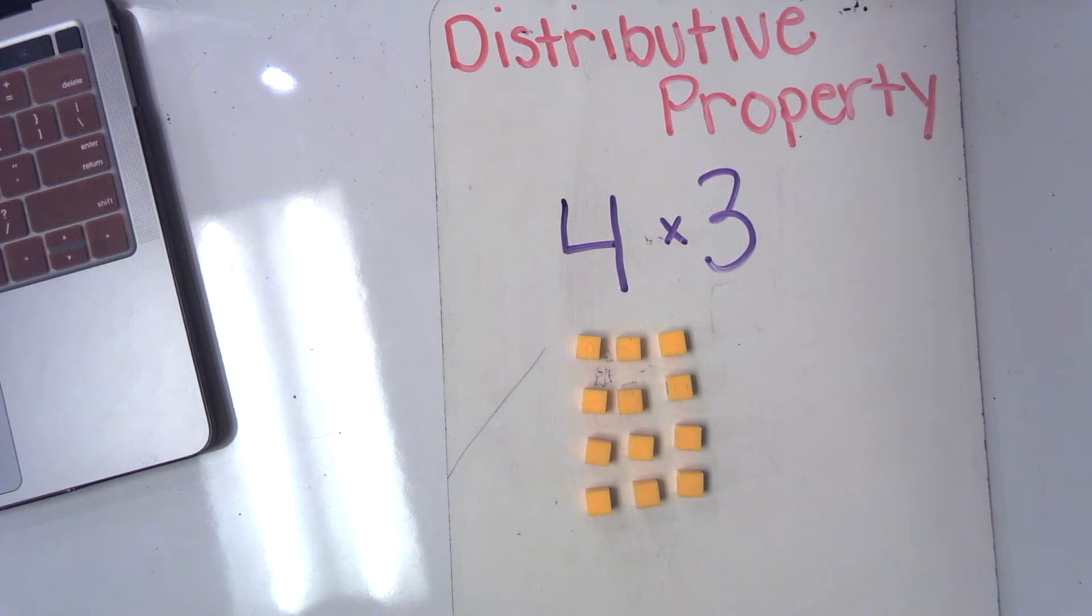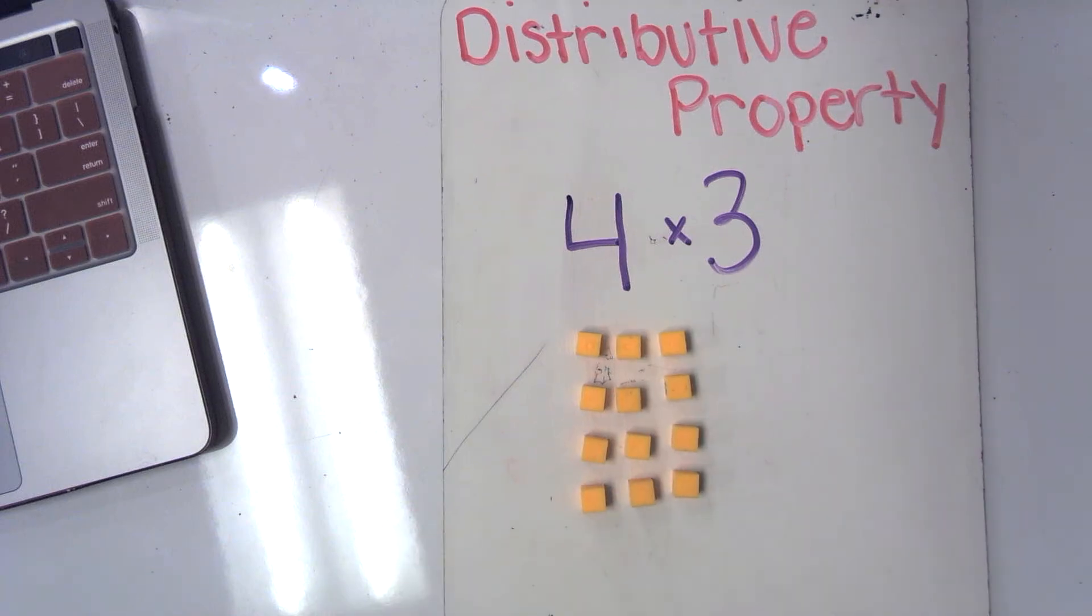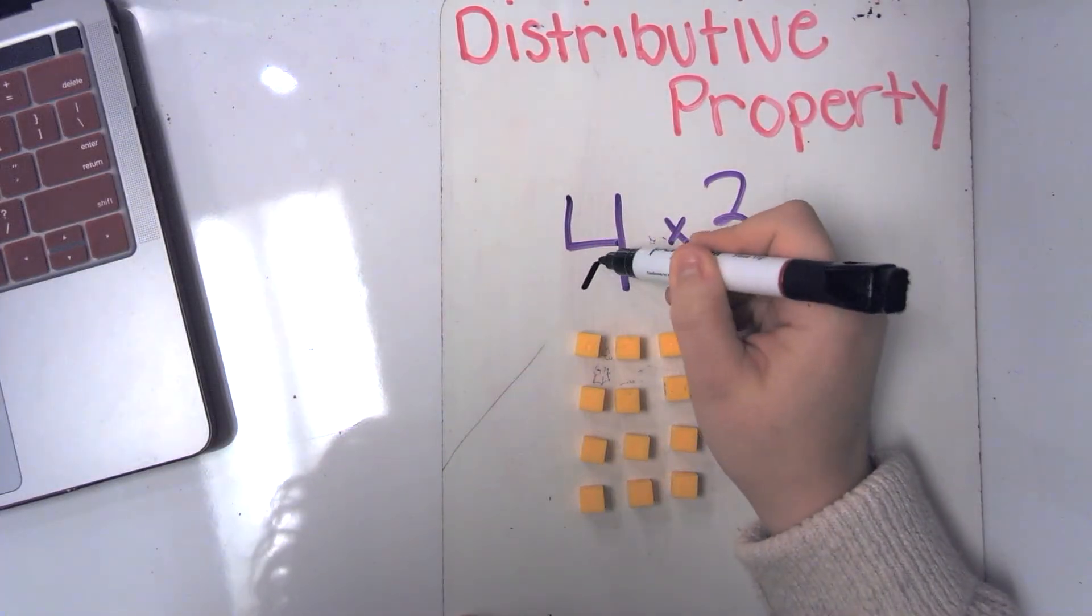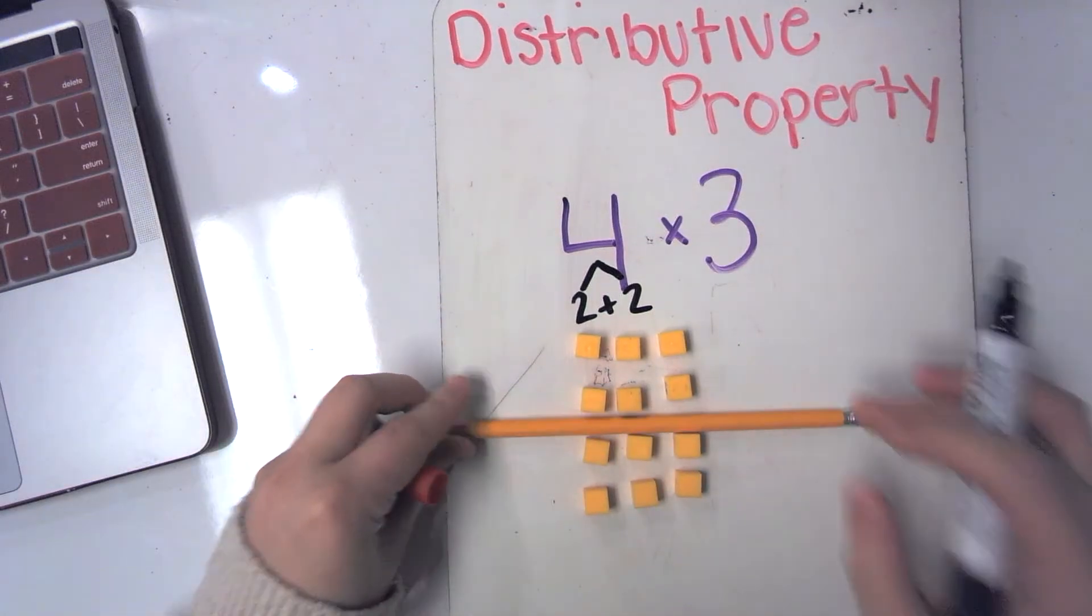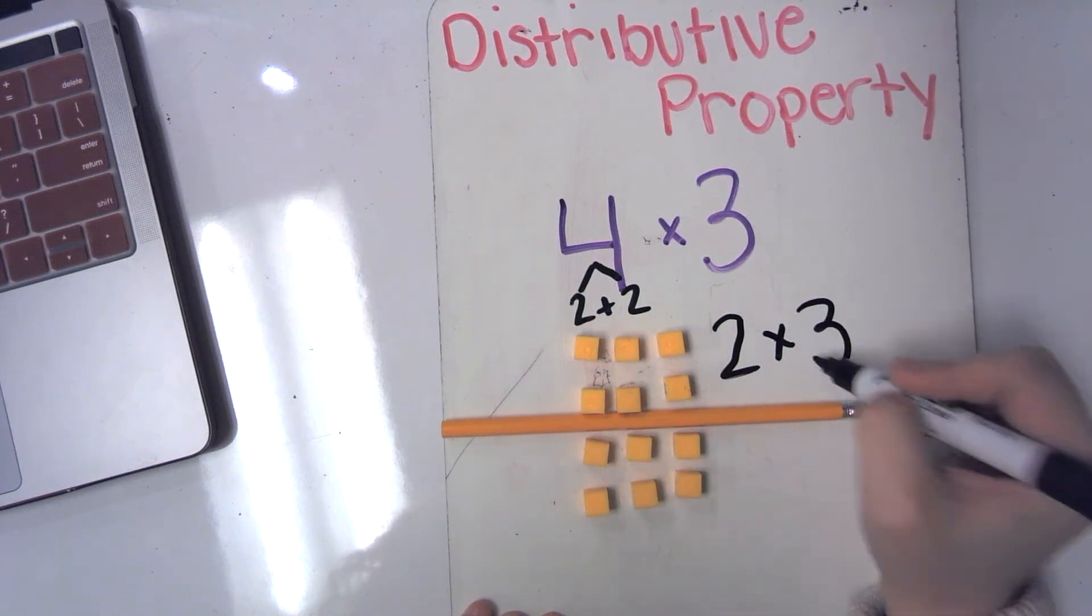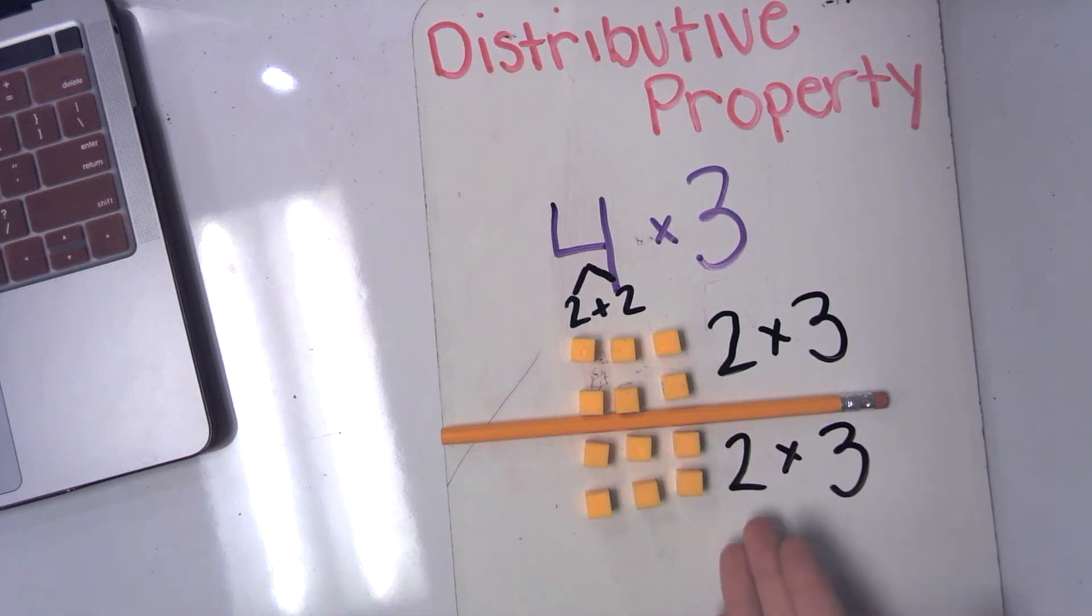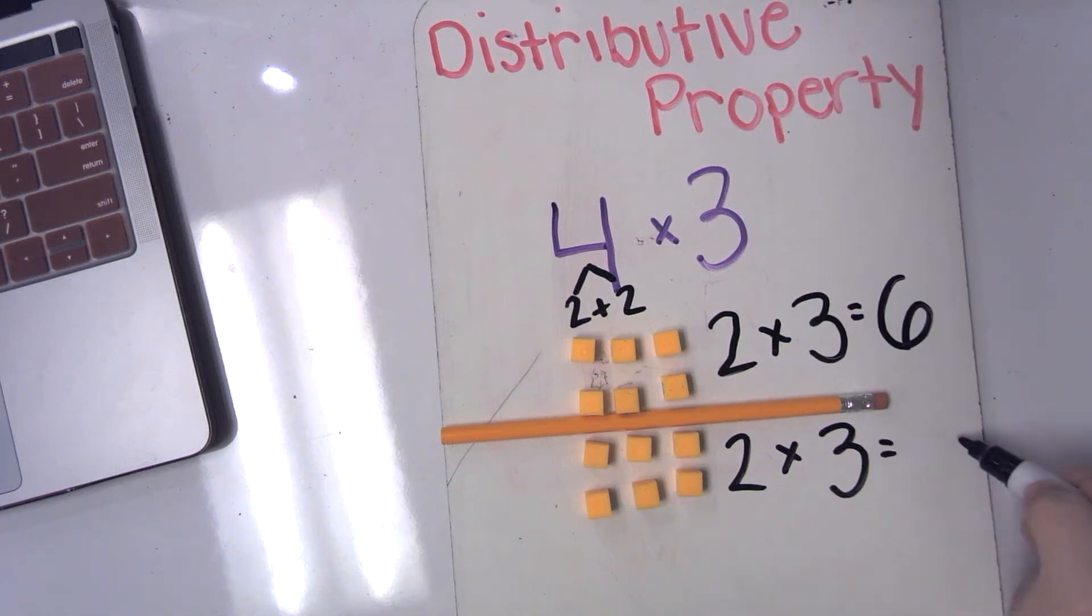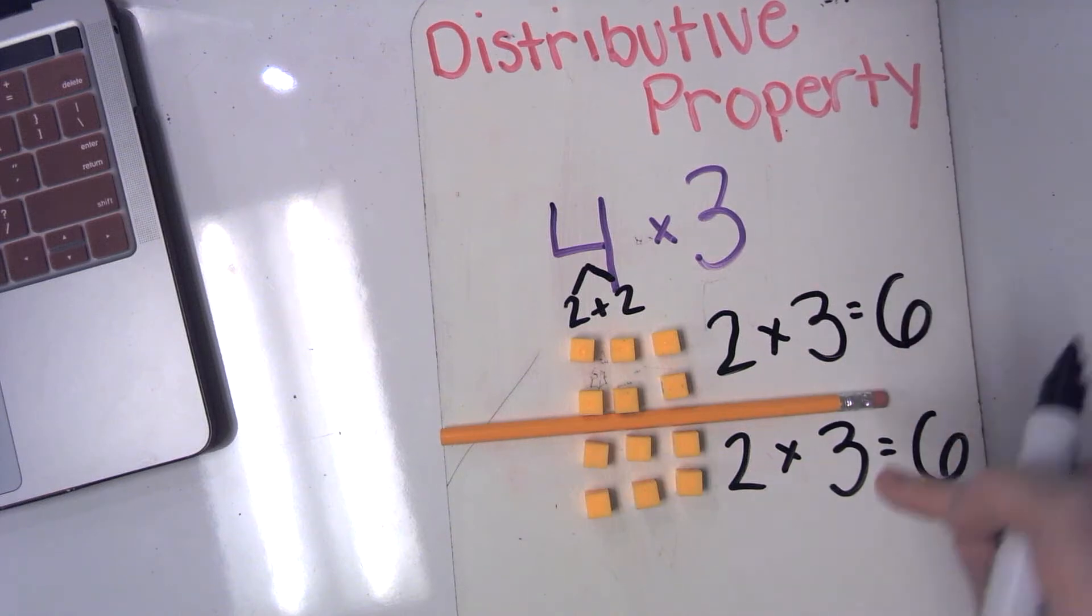Now you want to ask yourself, is it more reasonable to break apart the four, the number of rows, or to break apart the three, the number of columns? I kind of want to break apart the four into two smaller numbers. So I could take that four and I could think of it more as two plus two. And I could take my array and say, instead of having four rows of three, I could break it in half and I could have two rows of three plus two rows of three. Now I love this problem because I know how to multiply by two. When you multiply by two, you just double the other number. What's three plus three? Six. And same goes down here. So four groups of three is the same thing as two groups of three plus two groups of three.